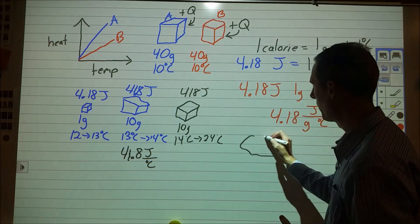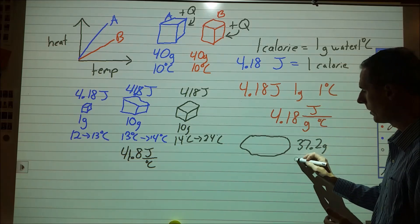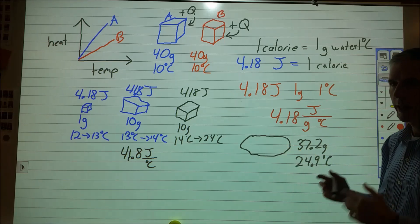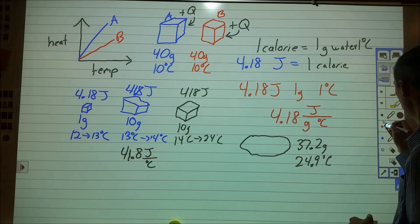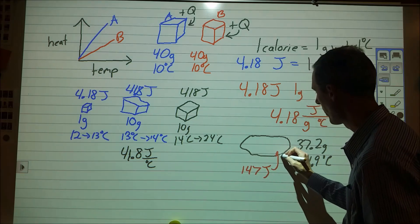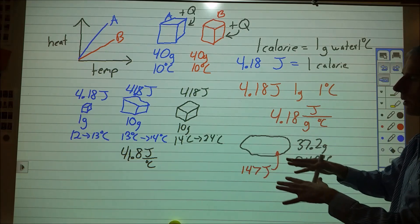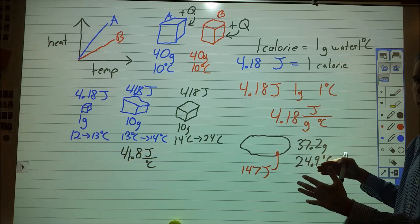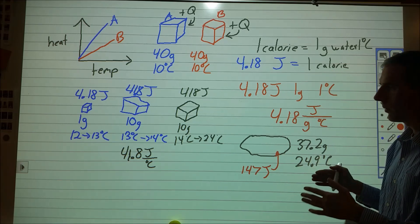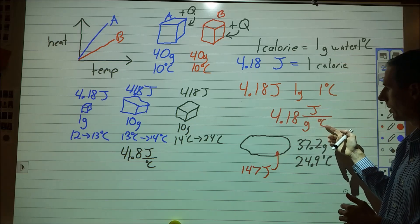Now, what I want you to do: if I had a puddle of 37.2 grams of water and I wanted to heat it up 24.9 degrees Celsius, is it possible to figure out how much energy that would take? Or alternatively, for the exact same puddle, if I put in 147 joules of energy, could we figure out how much its temperature would change? Using the same methods we've been developing, is it possible with a more complicated set of numbers to figure that out? Try number one on the worksheet in any way you can, using this 4.18 joules per one gram per degree Celsius for water.